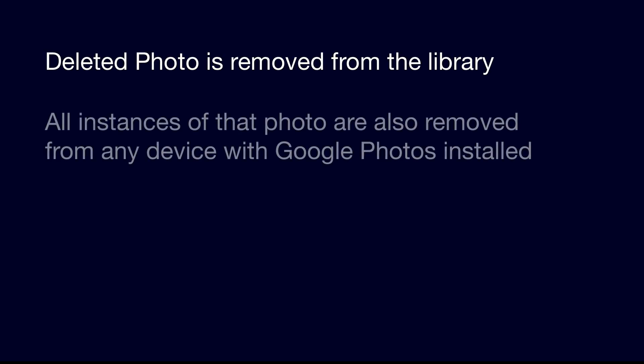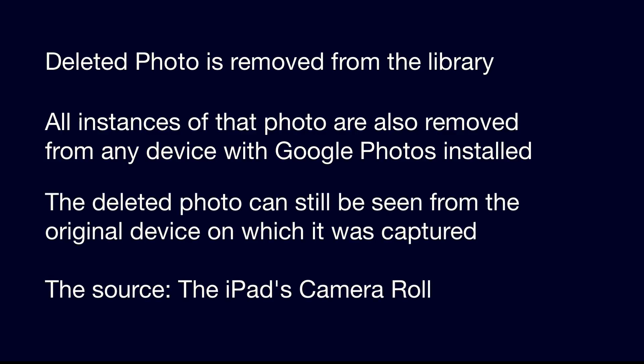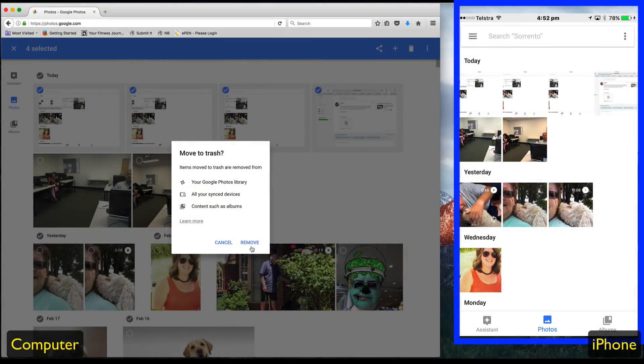Every instance of that photo that appears on another device — the iPhone, the iPad, an Android phone, whatever the device is — as soon as I remove them from the main photo library, they will also disappear from the iPhone Google Photos library. The only place you'll be able to see those photos is the original source, which is the iPad, so the photos will still be there in the camera roll. When I click remove, they'll immediately disappear from the Google Photos library on the computer, and if you watch the iPhone, they'll also disappear from there.